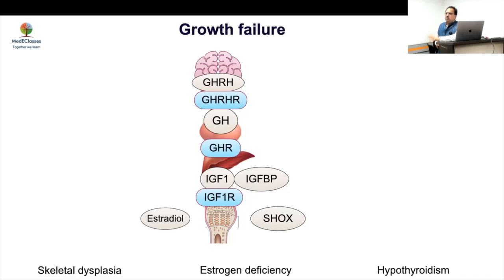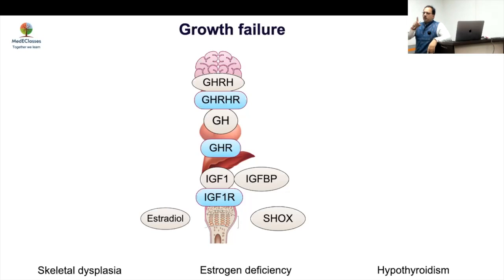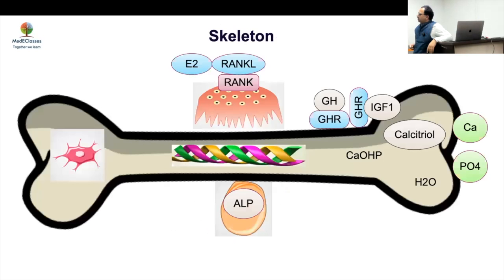If you have a short girl with Turner syndrome, you exclude celiac disease, thyroid dysfunction, and systemic illness, then proceed with growth hormone therapy. This is an important practical approach in the management of Turner syndrome.